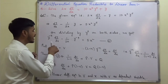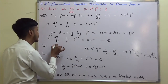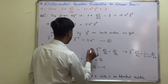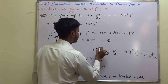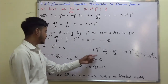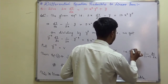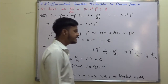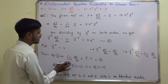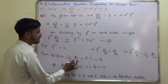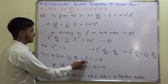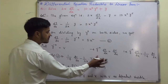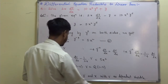Put v = y^(1−5) = y^(−4). Differentiating: dv/dx = −4·y^(−5)·dy/dx, so y^(−5)·dy/dx = (−1/4)·dv/dx. Substituting into equation 2: (−1/4)·dv/dx − (1/2x)·v = 5x². Here q equals 5x².